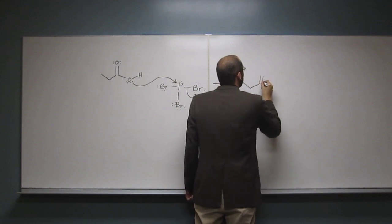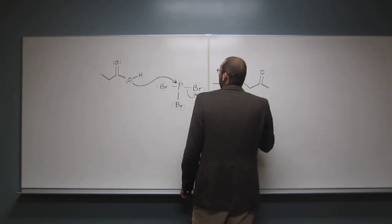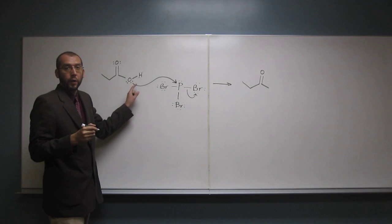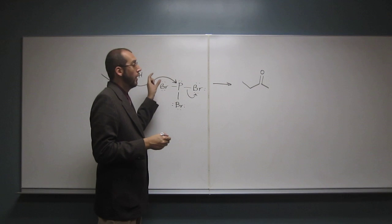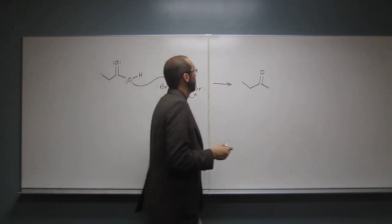What we're doing essentially is taking a bad leaving group, the OH group here, and turning it into a good leaving group, which is that oxygen connected to the phosphorus.